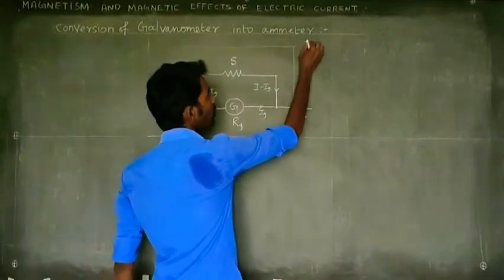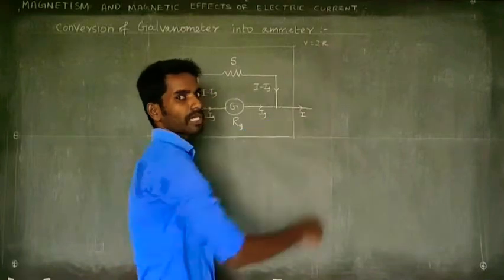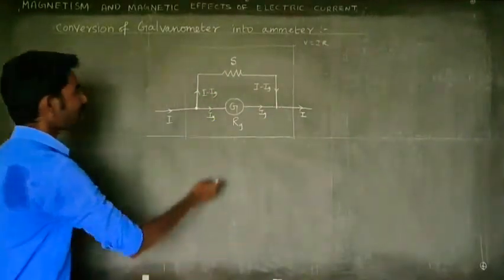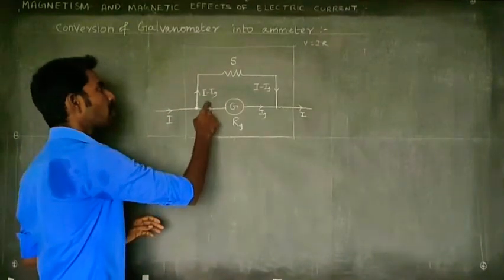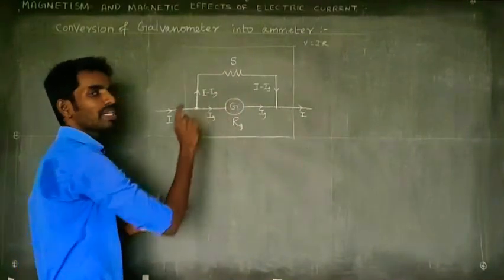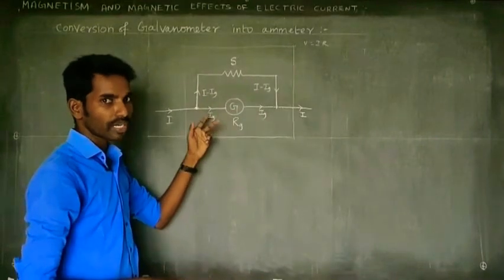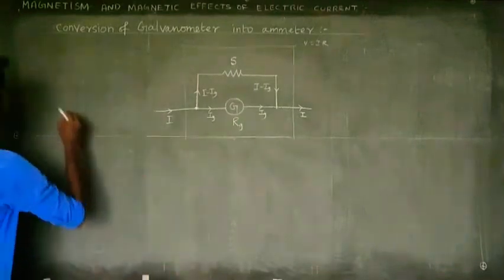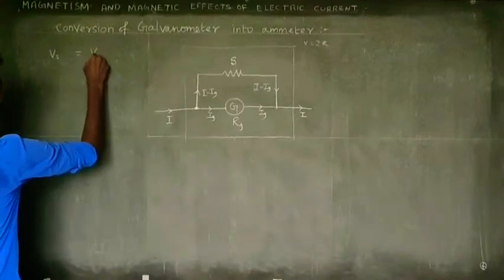V equals IR. The two resistances, RG and the shunt S, carry different currents — Ig and I minus Ig respectively — but the voltage drop across them is equal because these two resistances are connected in parallel. Voltage drop across the shunt resistance equals voltage drop across the galvanometer.